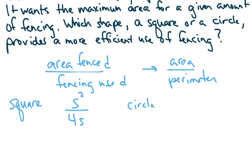For a circle, the area is pi R squared. And the perimeter of a circle is the same as finding the circumference, which is 2 pi R. I'm going to simplify both of these expressions. This one simplifies to S over 4. And this one simplifies to R over 2.